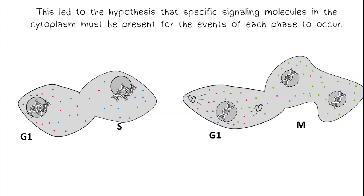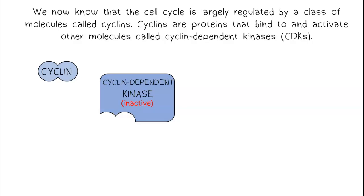This led to the hypothesis that specific signaling molecules in the cytoplasm must be present for the events of each phase to occur. We now know that the cell cycle is largely regulated by a class of molecules called cyclins.